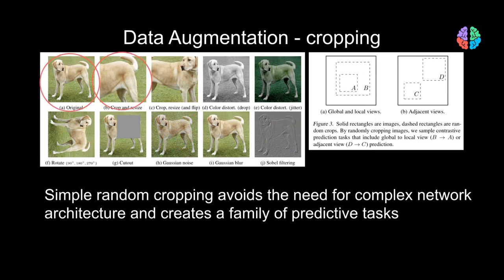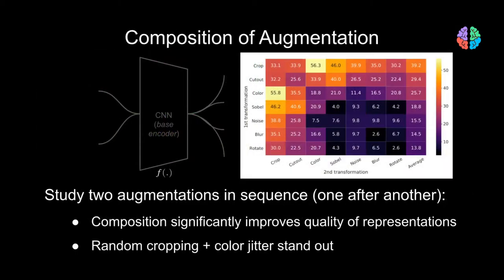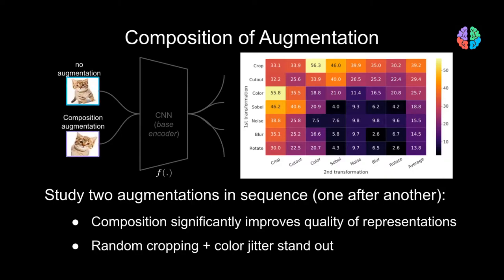Using cropping, the network does not only learn global to local contrast, but it also learns to contrast between adjacent views of the same image. The paper also does composition of augmentations, where you fix one image and apply a series of augmentations to the second image. They do a systematic study of these compositions, combining cropping with color distortion, blur, and noise. The results clearly indicate that combining cropping with color distortion stands out in terms of accuracy, so they choose to use the two and drop the rest.